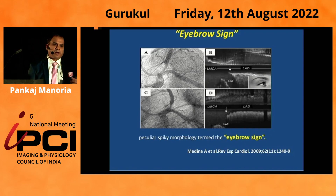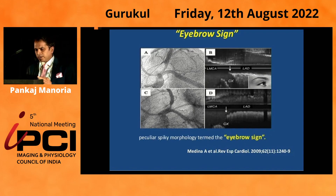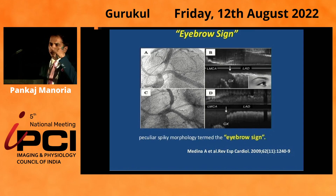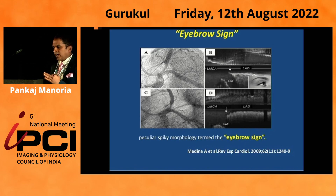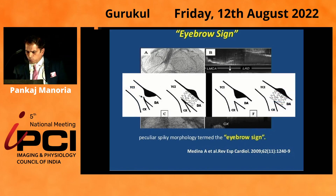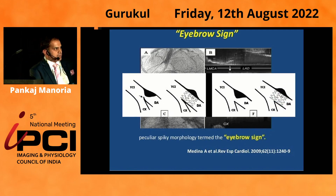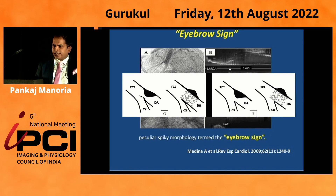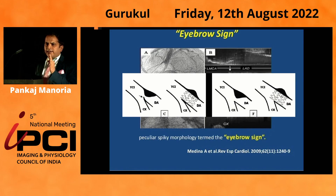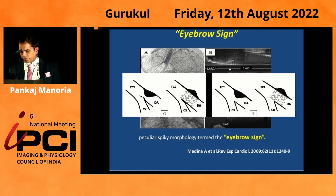Another important feature in vessel analysis is the bifurcation angle. If you see a very hairy, spiky carina — what we call the eyebrow sign — that means the side branch has a high chance of vessel closure. If the carina is very spiky and you implant the main vessel stent, it will push the carina towards the side branch. So whenever we see on IVUS a hairy, spiky carina or eyebrow sign, this is a predictor of side branch closure.